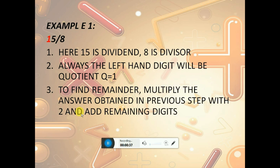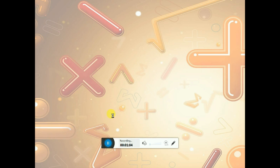Now to find the remainder, multiply the answer obtained in the previous step with 2 and add the remaining digit. The answer is 1, and the remaining digit is 5. So r equals 1 times 2 plus 5, which equals 7. The answer will be quotient 1, remainder 7.